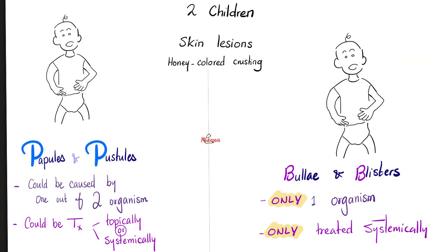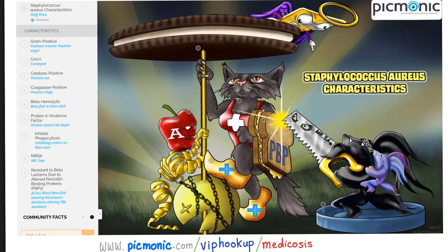We talked about this mnemonic before when covering Staphylococcal Scalded Skin Syndrome. Remember these two cases from the Staph aureus diseases video? One has papules and pustules — that's non-bullous impetigo. The other has bullae and blisters — that's bullous impetigo.